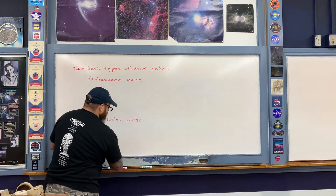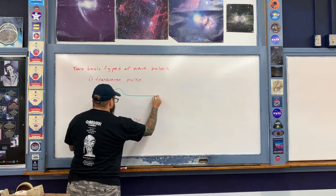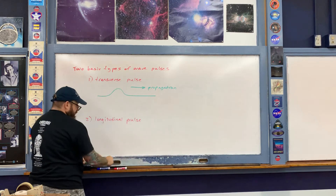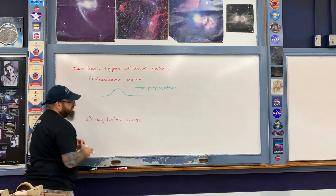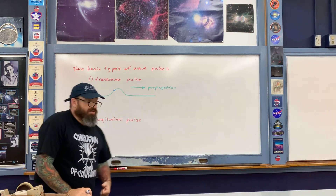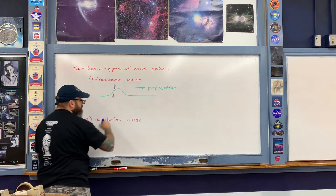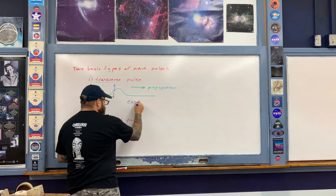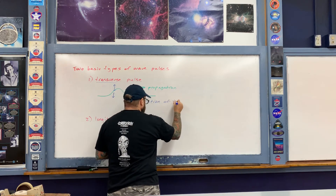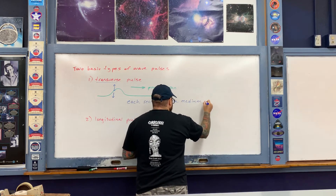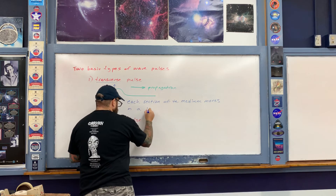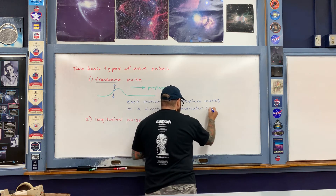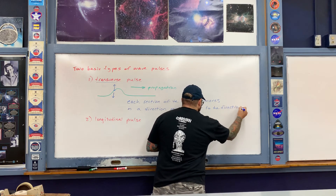With the transverse wave pulse, after I create the pulse, it propagates down the length of the spring — this is the direction of propagation. But if you take a look at an individual piece of the medium, an individual coil of the spring, as the pulse propagates through it, that piece of the spring only moves in a direction perpendicular to the direction of propagation. That's what is meant by the word 'transverse' — each section of the medium moves in a direction perpendicular to the direction of propagation.